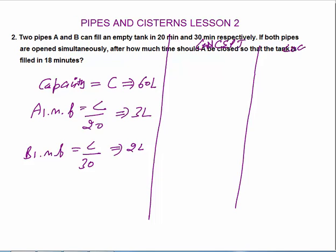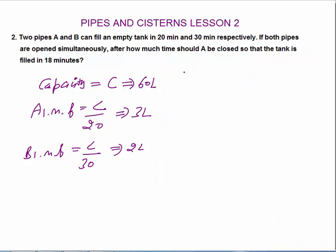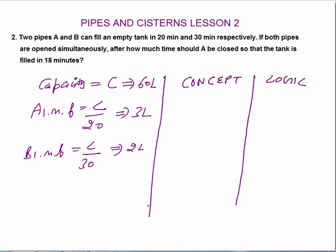This question can be solved either by concept or by logic. I will explain both methods. By concept: let's say pipe A was open for T minutes. After T minutes, A was closed, and this value of T is what we need to calculate. In one minute A fills 3 liters, so in T minutes A fills 3T liters.